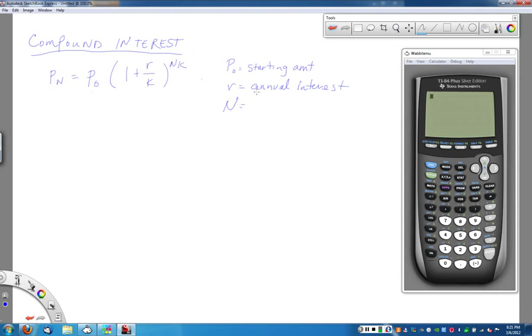N is kind of like my T, it's my time in years. And K is going to be how frequent, how many times a year my money is being compounded.